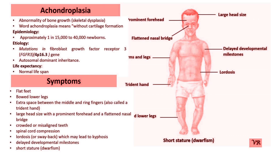disproportionate limb size, large head, spinal issues like lordosis and kyphosis, crowded teeth, frequent ear infections, and potential breathing problems due to the small chest size.